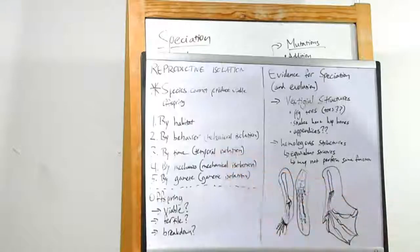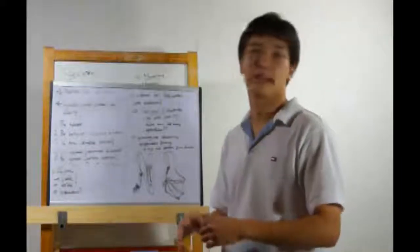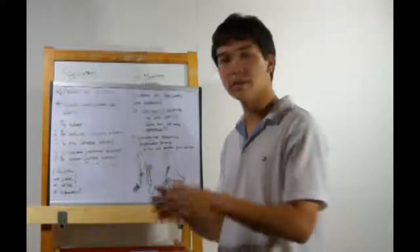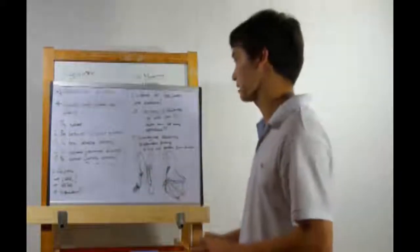Next up, by time. Temporal isolation. If you're a badger that mates during the spring, you're not going to be able to mate with a badger that mates only during the winter. You may love her as much as you like. She's not interested. Temporal isolation.